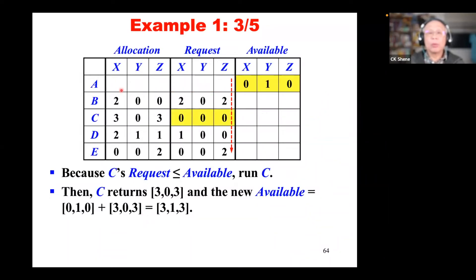We set that process's finish to true, indicating it is done, then go back to step three to find another process that is not yet done and whose request is less than or equal to the current available working area. We keep going until we can't find such a process.